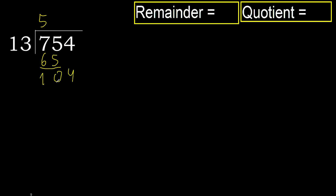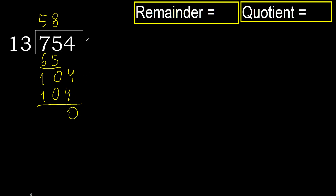Next, bring down — 104. 13 multiplied by 9 is greater. 13 multiplied by 8 is 104, which is not greater. Subtract — remainder is 0. No next digit, so we finish. The answer is complete.